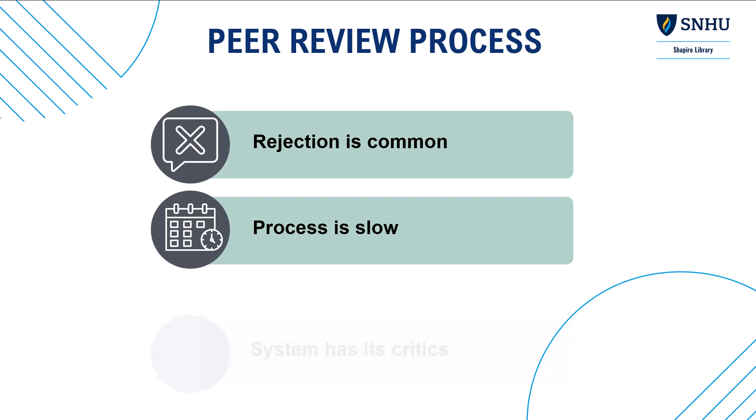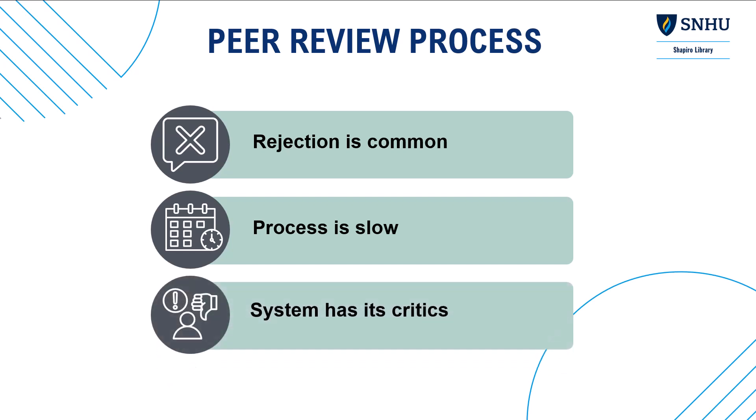The peer-review system has its critics, and scholars continue to think about how the peer-review process might be improved. It's slow, costly, subjective, and can reflect human biases. Despite its imperfections, it generally works well and is the best we have at filtering good and bad information in academic scholarship.